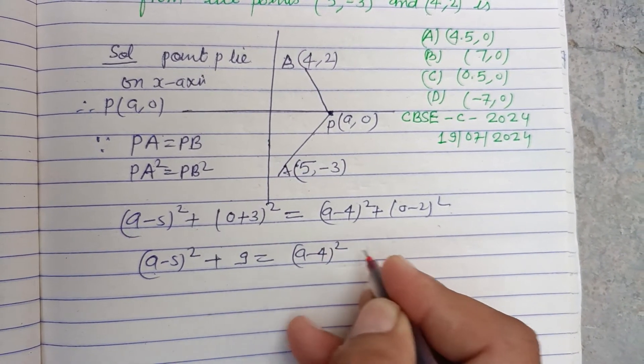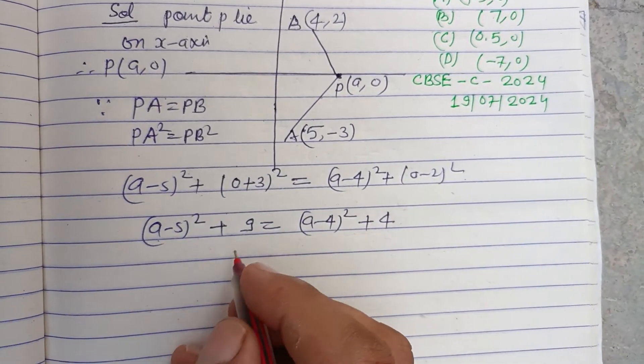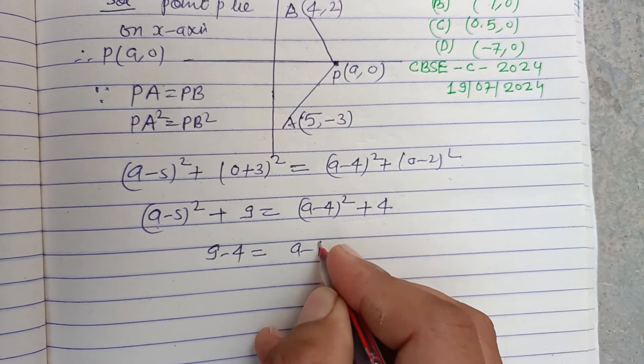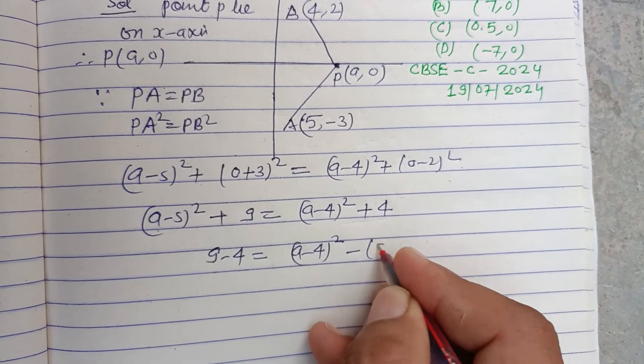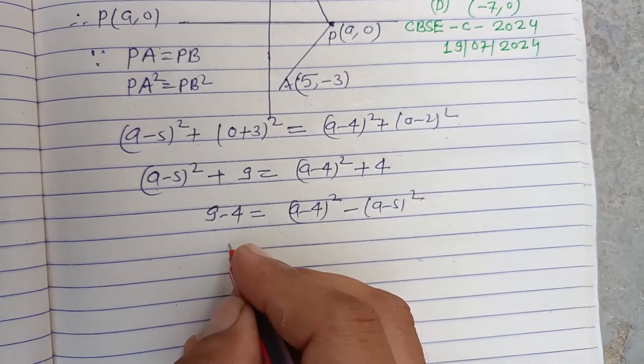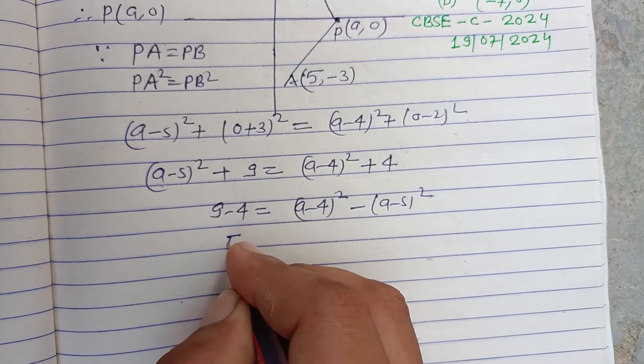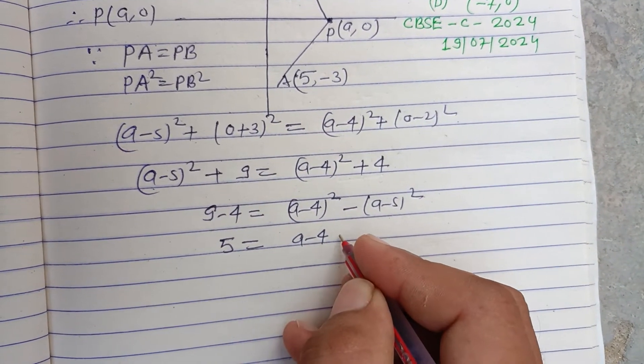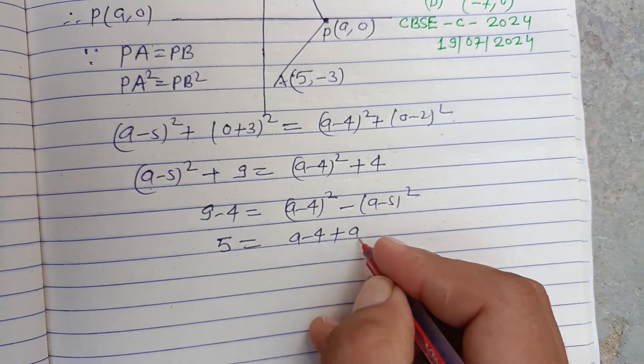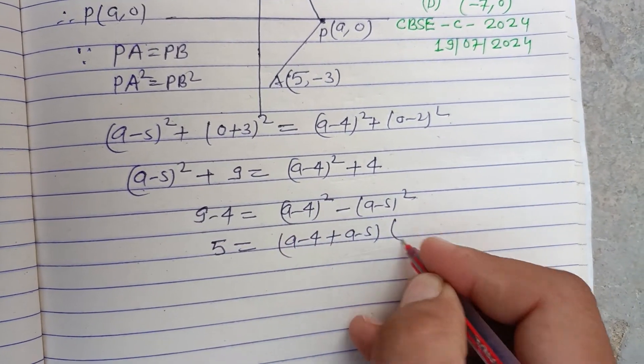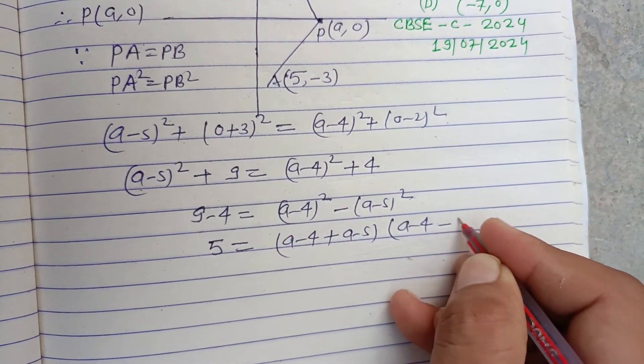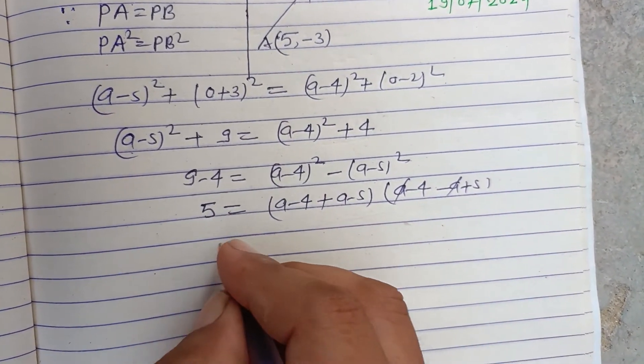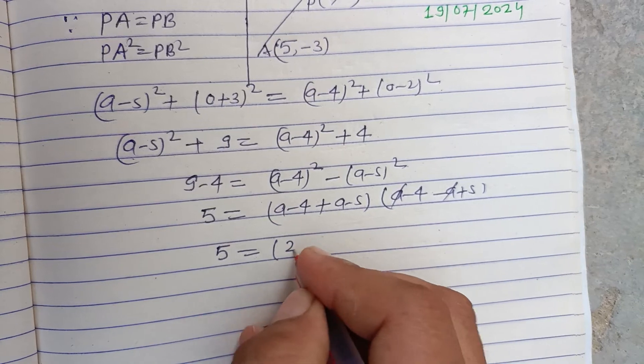So 9 - 4 = (a-4)² - (a-5)². This equals 5. Using the identity (a+b)(a-b), we get (a-4+a-5)(a-4-a+5), which simplifies to (2a-9)(1). Therefore, 5 = 2a - 9.